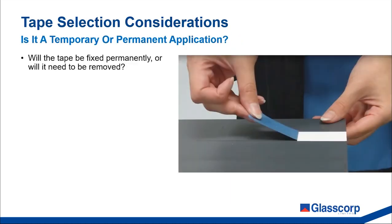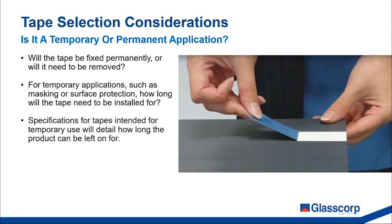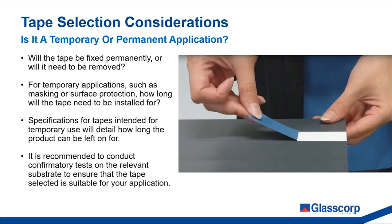Finally, when selecting a suitable pressure sensitive tape, consider if the application is permanent or temporary. For temporary applications such as masking or surface protection, consider how long the tape will be in place before being removed — the tape specifications will often indicate the length of time the tape can be left exposed, after which there is a risk that residue could be left on the material. We recommend that confirmatory tests are conducted on the relevant substrate to ensure the selected tape is suitable, including checking that good adhesion can be achieved and that the tape can be removed cleanly without staining or damaging the surface finish.